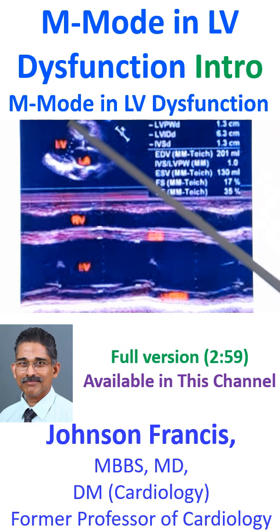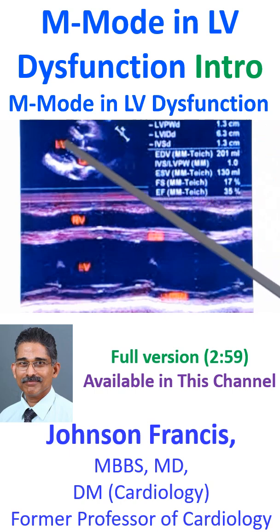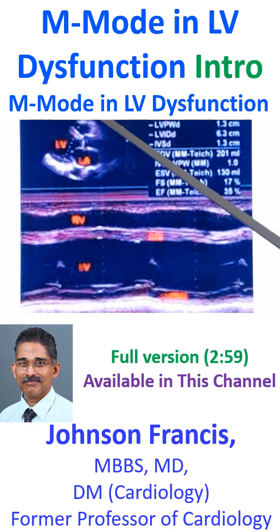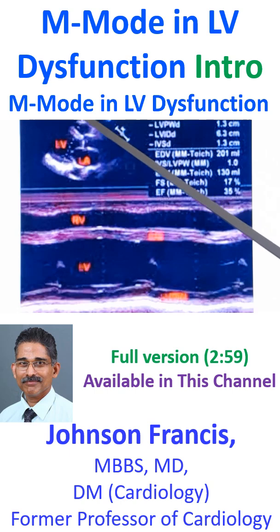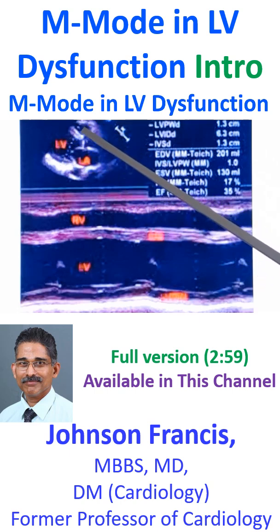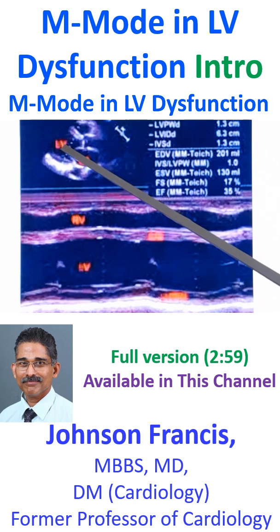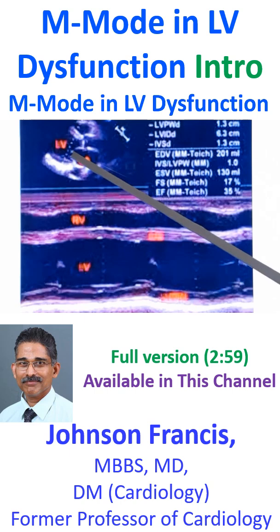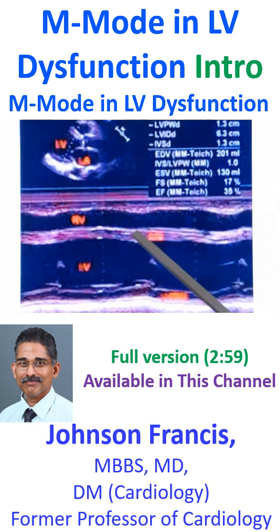In the inset you can see the two-dimensional image location of the transducer here in the parasternal region. This is the parasternal long axis view, showing the right ventricle outflow tract, left ventricle, left atrium, aorta, aortic valve, and mitral valve. These are the things you are seeing in that inset image.